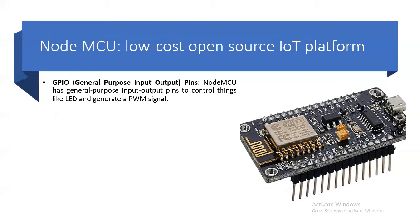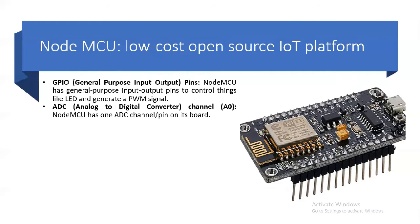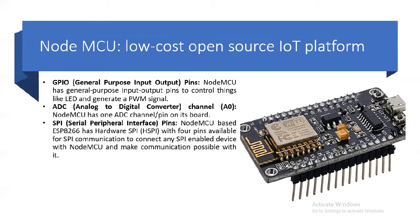NodeMCU has many features. It is a low-cost, open source IoT platform. It has general-purpose input-output pins — there are almost 13 GPIO pins available on the NodeMCU. There is only one analog-to-digital converter, meaning only the A0 pin accepts analog input from an external source.